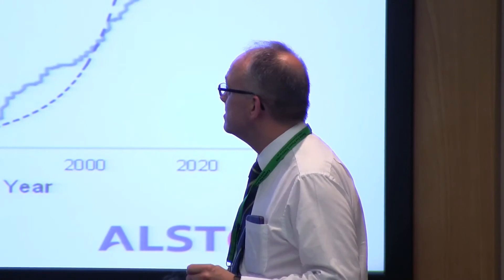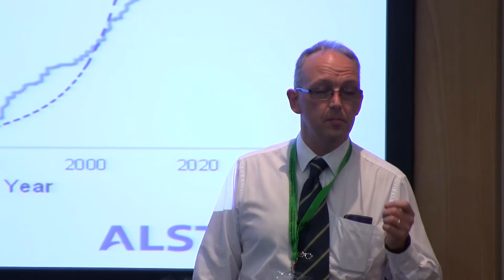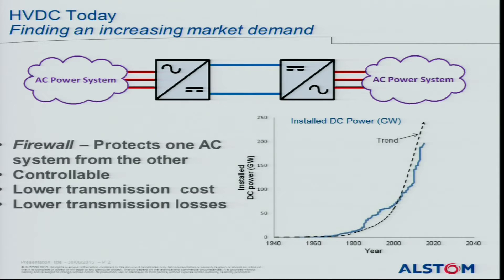That comes into controllability as well — lower transmission costs and lower transmission losses per kilometer of transmission. DC is a cheaper way of transmitting than AC.